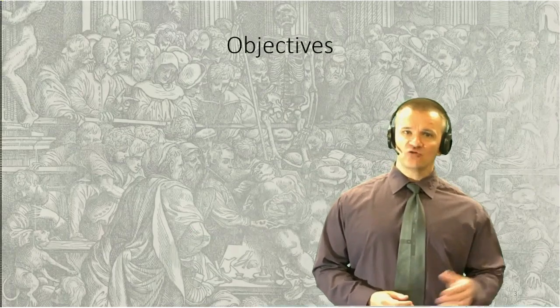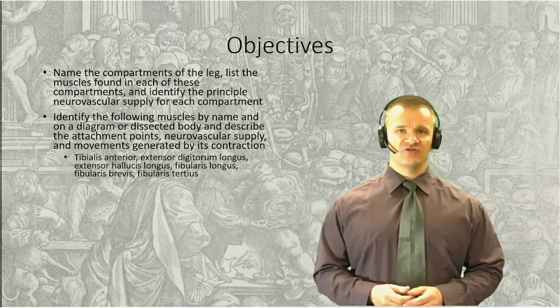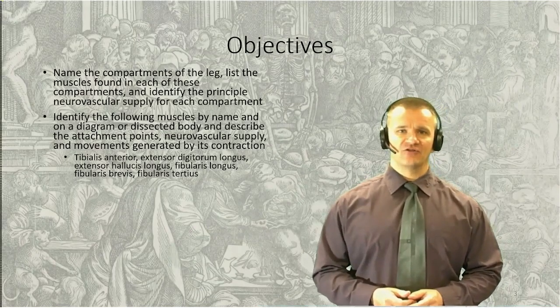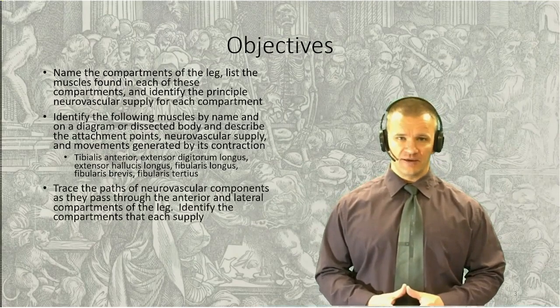Good day, and welcome to another installment of the Gross Anatomy video podcast series. This is Dr. Stuart Engels. Having completed the posterior compartment from the previous lesson, the focus of today's session is the anterior and lateral compartments of the leg, which contain our dorsiflexors and our everter muscles. We'll look at the muscles in this region and their actions, and revisit the neurovascular supply.